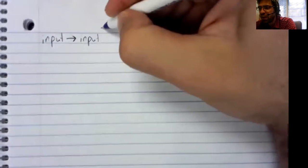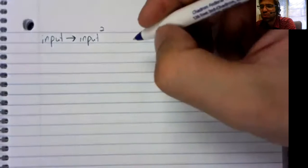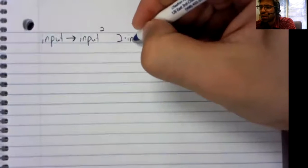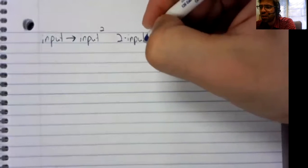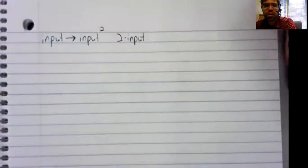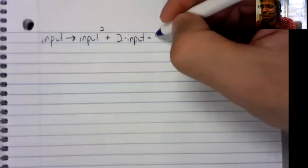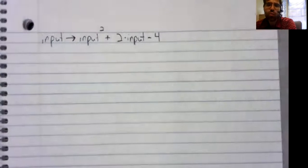So, you have a function that takes an input and maybe it squares the input and it multiplies the input by two. And then it adds those together and subtracts four.